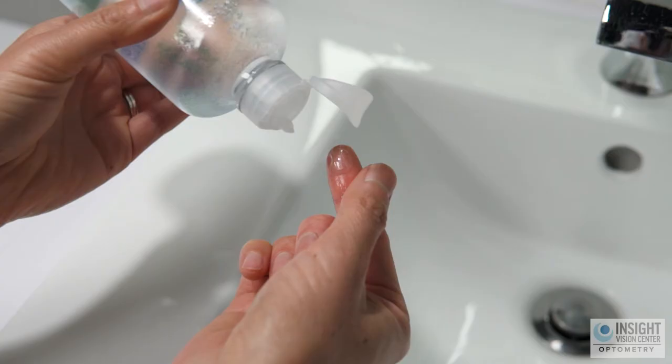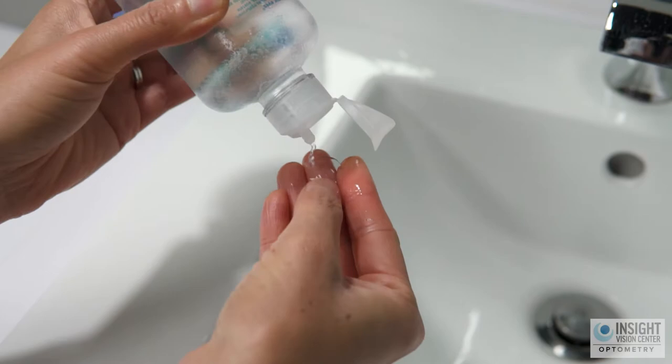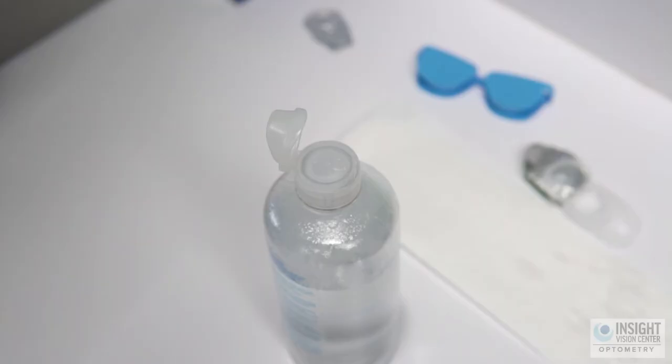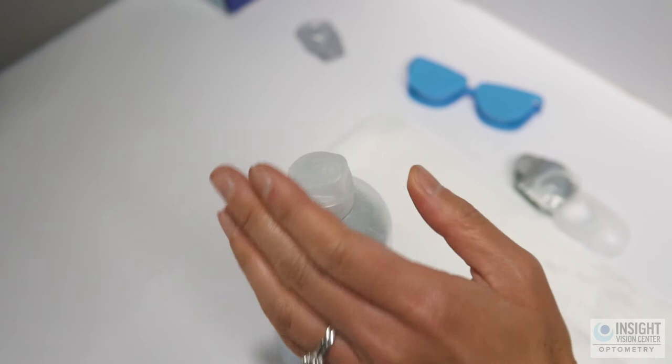If the contact lens drops on the counter, rinse it off with multipurpose contact lens solution before reinserting it into your eye. Remember to close the tip of the multipurpose solution bottle to avoid contamination.